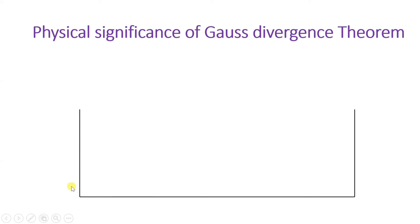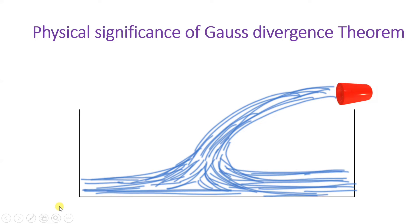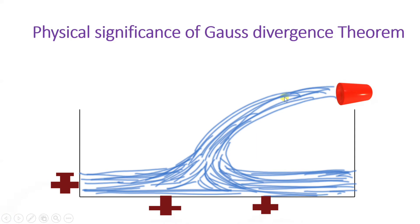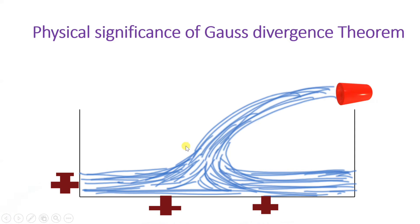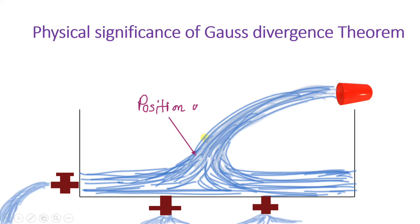Now let us understand the physical significance. Here we have a large tank with a tube through which water is being poured inside. The tank has three walls from which water is coming out. Where water is being poured in, the water level is continuously increasing, and if you calculate divergence at that position, you will find that divergence is positive — this point is acting like a source.